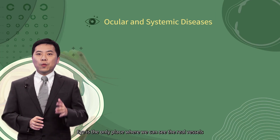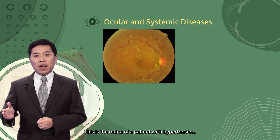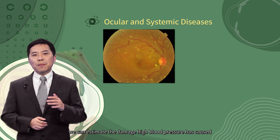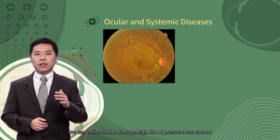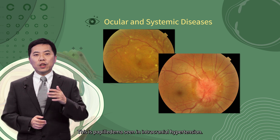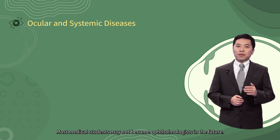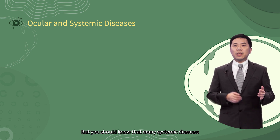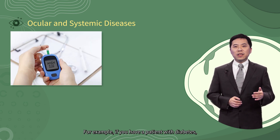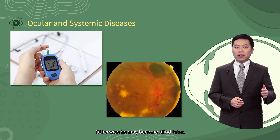The eye is the only place where we can directly see real vessels and nerves in a human being. This is the retina of a patient with hypertension — by looking at this retina, we can estimate the damage high blood pressure has caused to the patient's target organs. This is papillary edema seen in intracranial hypertension. Most medical students may not become ophthalmologists, but you should know that many systemic diseases can have ocular involvement. For example, if you have a patient with diabetes, you should refer them to an eye doctor; otherwise, they may become blind later.